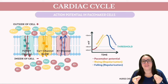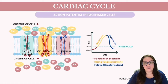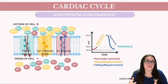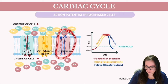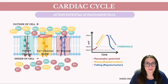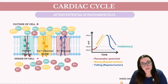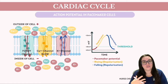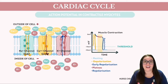This slow depolarization phase is termed the pacemaker potential. Upon reaching the threshold, calcium channels open, allowing calcium into the cell and further depolarizing the membrane — marking the beginning of the action potential's upward trajectory. Once depolarization hits its peak, potassium channels open and calcium channels close, causing potassium to leave the cell and voltage to drop below negative 60 millivolts. Ionic pumps then re-establish the original gradient, setting the stage for the process to begin again.